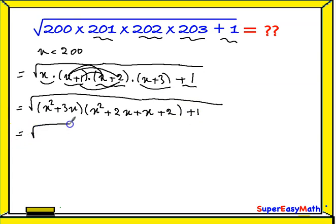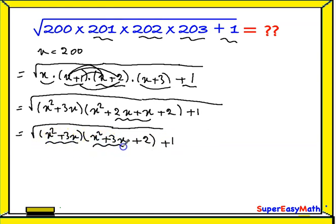Equal square root of x squared plus 3x and here we have x squared, 2x plus x equal to 3x plus 2 plus 1. If you notice we have x squared plus 3x common in these two expressions, so here x squared plus 3x and here x squared plus 3x.